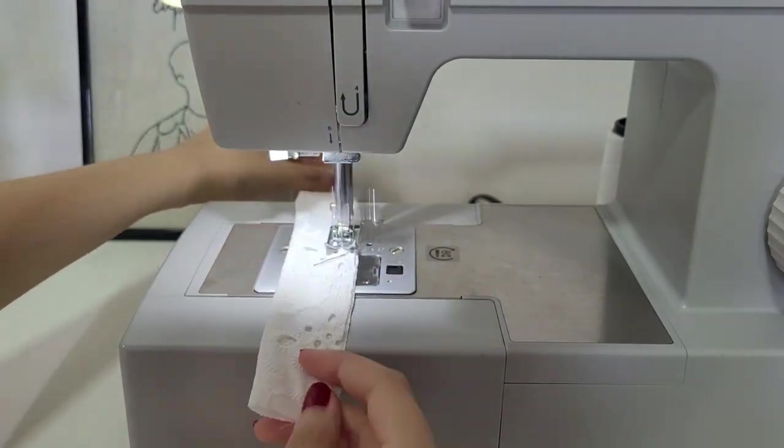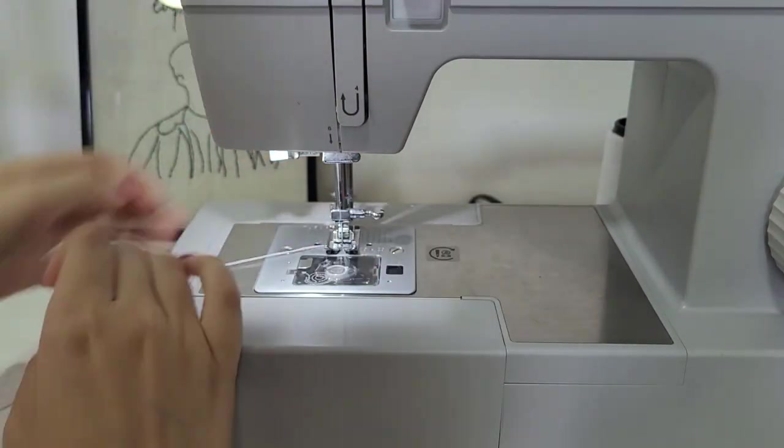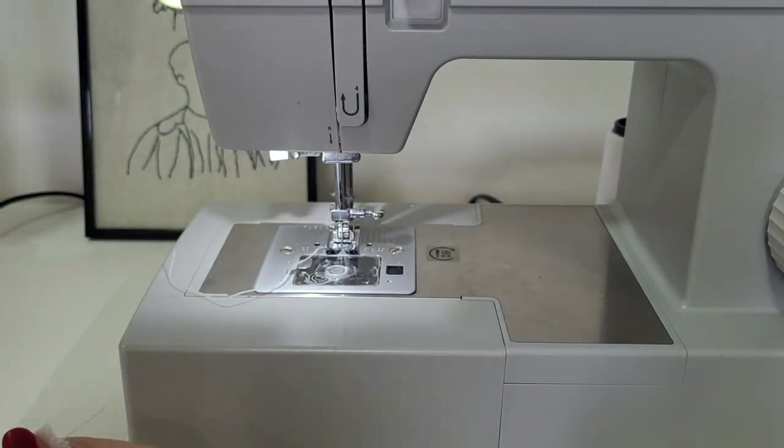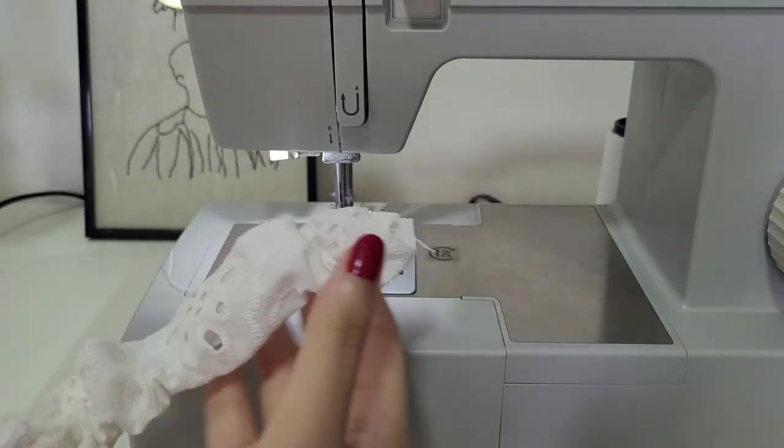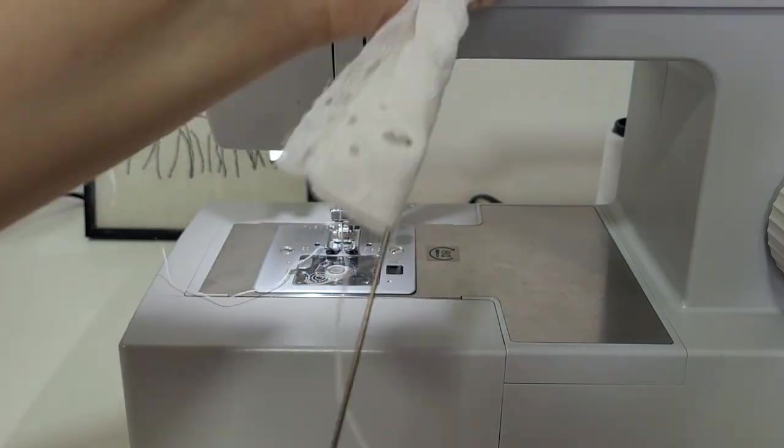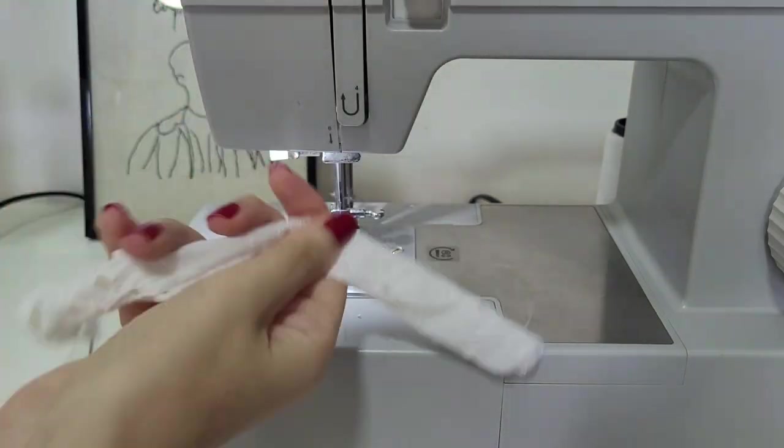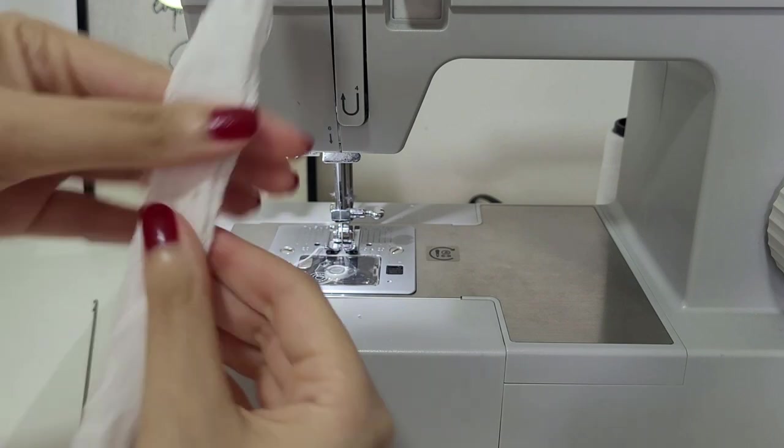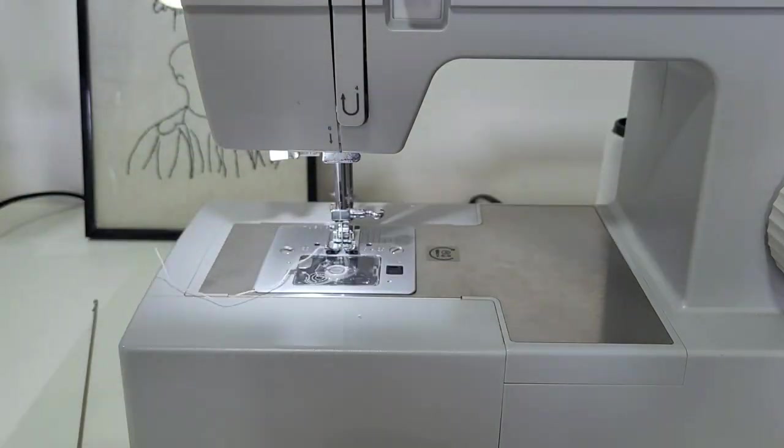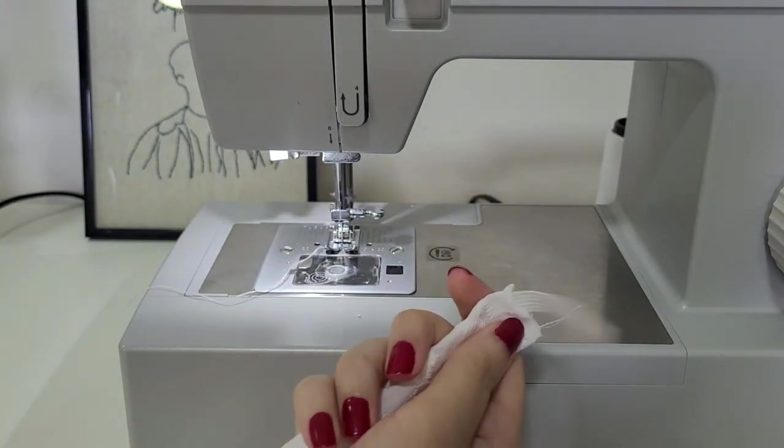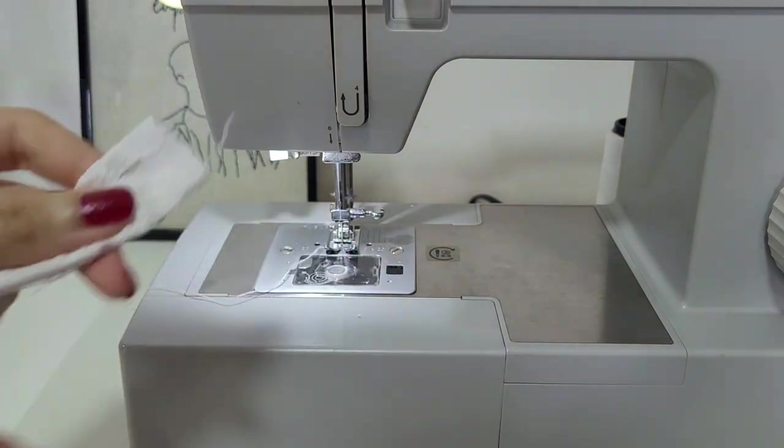Sew the band right sides together and turn that inside out. I'm using a loop turner, but you can use a safety pin if you like. Now put your elastic inside of it and topstitch both edges to secure it in place.